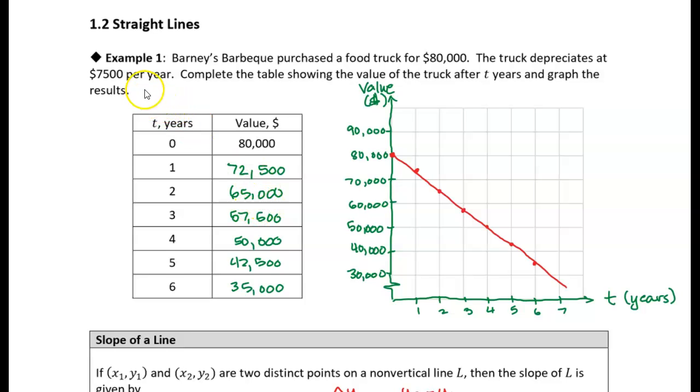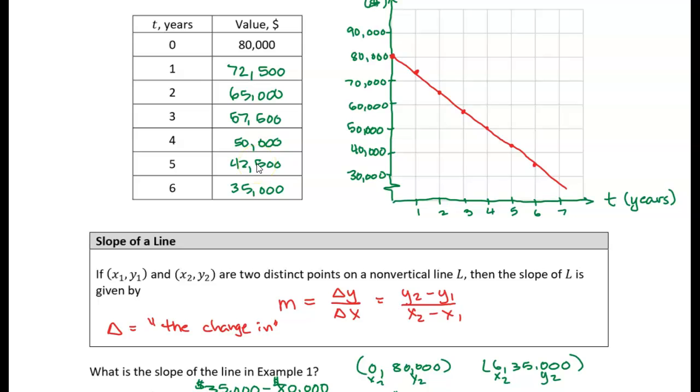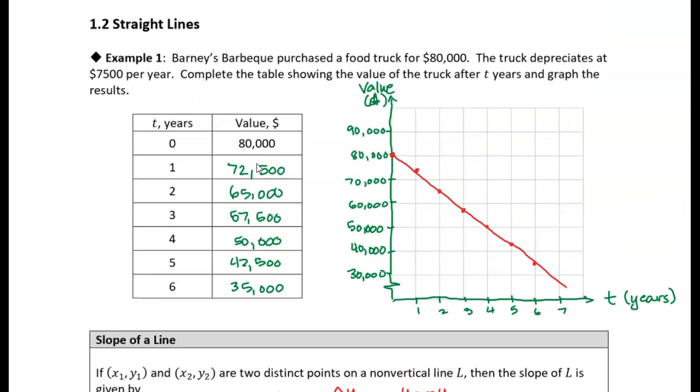And we were essentially given the slope. The slope we found out was the change in Y over the change in X. So we found that the slope of this line was a negative $7,500 per year. It was the rate of change of the value over time. So we have the slope and we have a number of points, so we can just choose one of them.